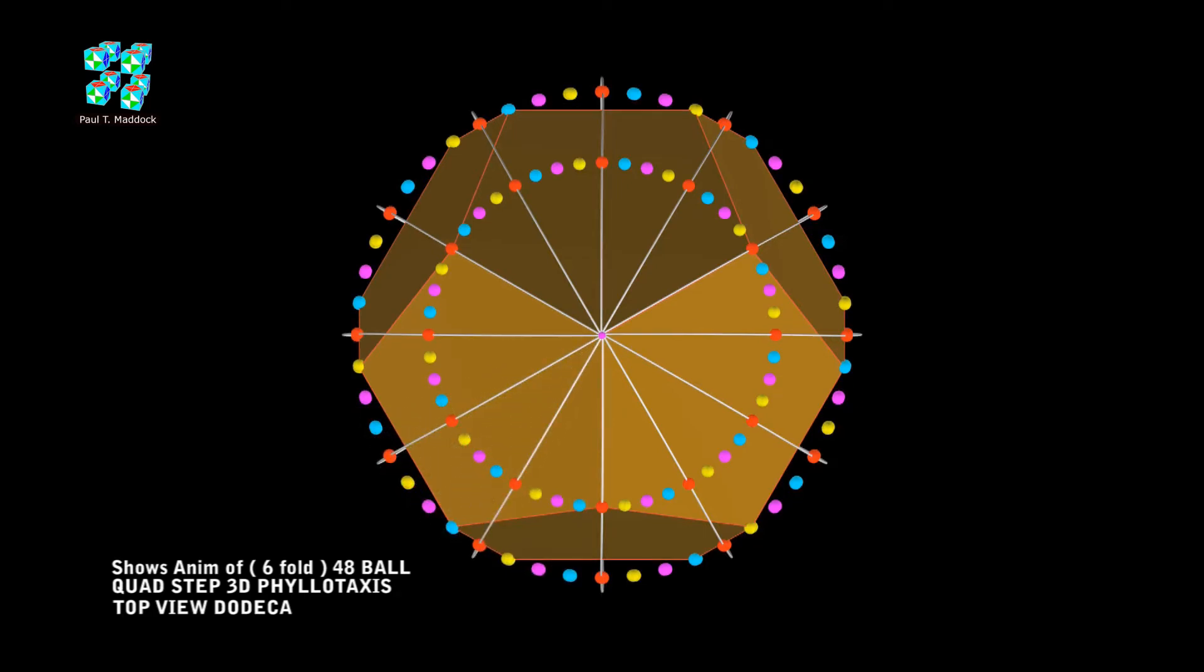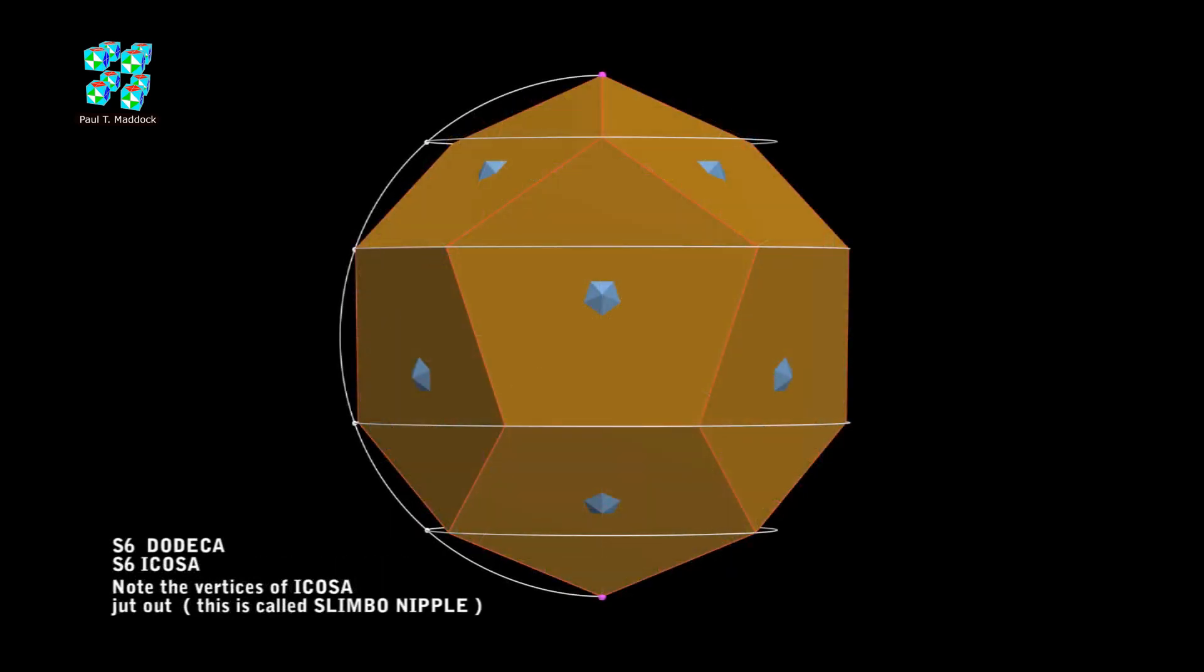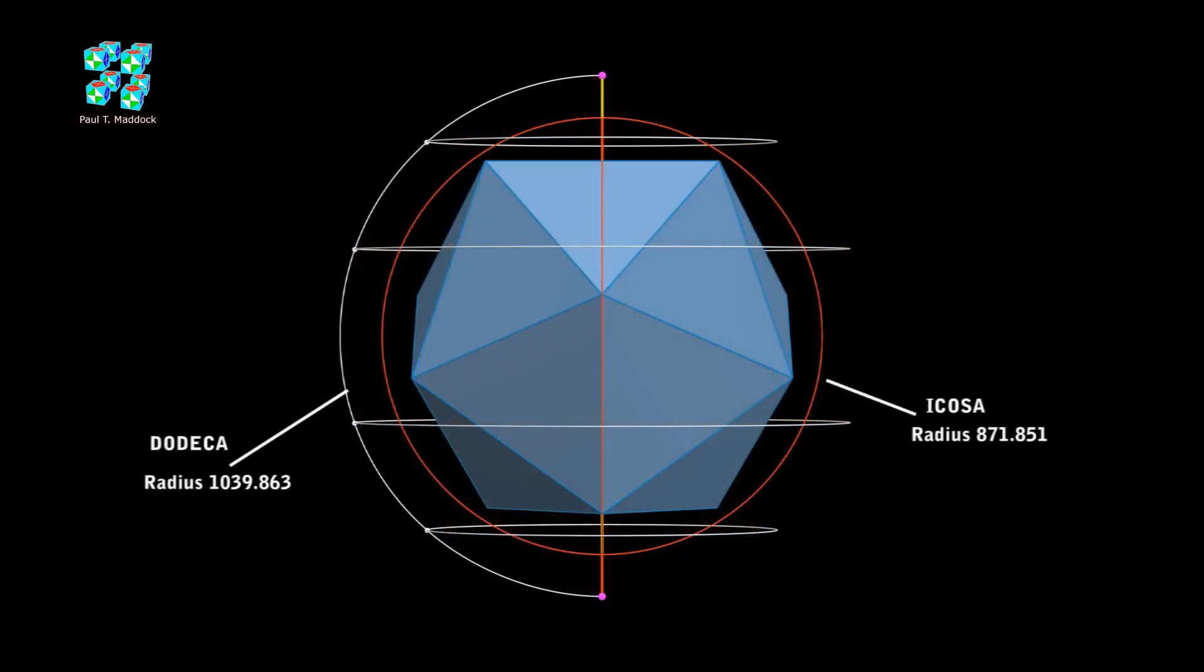We'll go back to the front view of the dodeca again. Now in front you can see a size 6 dodeca and a size 6 icosa. You can see that the icosa vertices are sticking out a little bit. These I call slimbo nipples and I explain them in my earlier videos. Now I'll show you the spherical outline of the dodeca and the icosa. I'm showing you the radius of the dodeca and I also show you the radius of the icosa for you to compare.